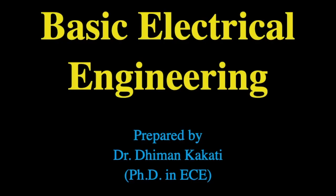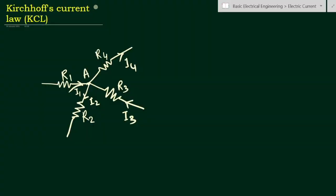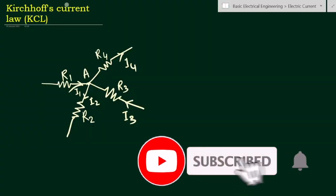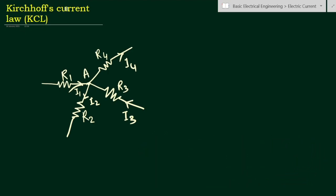Hello everyone, this is Dr. Dhiman. In this video we will learn about Kirchhoff's Current Law, also called Kirchhoff's Point Law. KCL stands for Kirchhoff's Current Law. According to this law, in any electrical network, the algebraic sum of the currents meeting at a point or junction is zero.